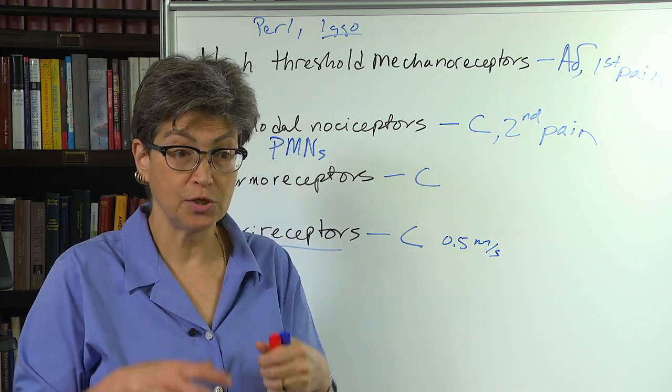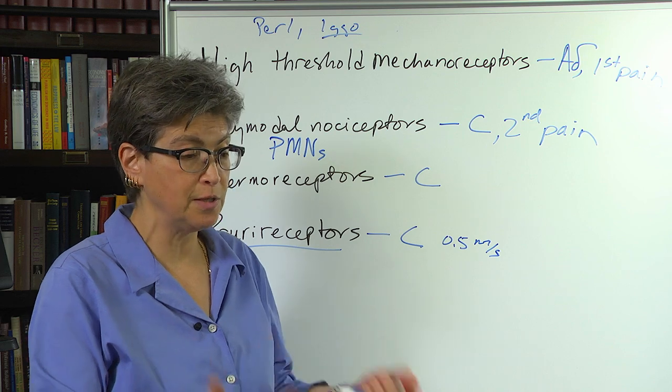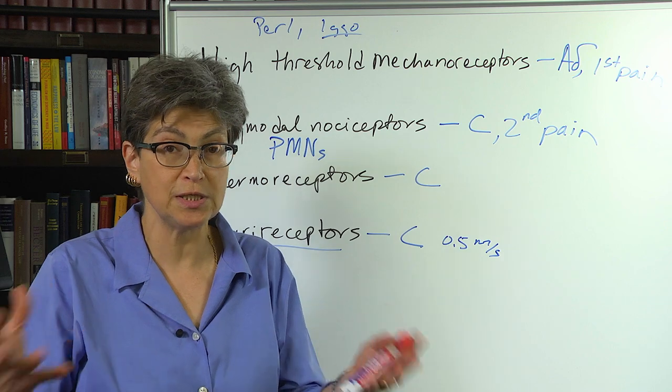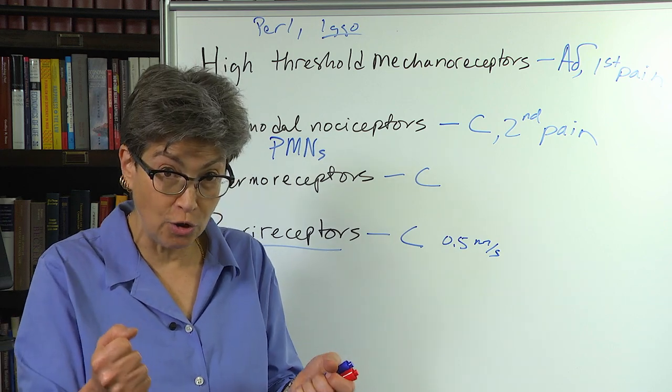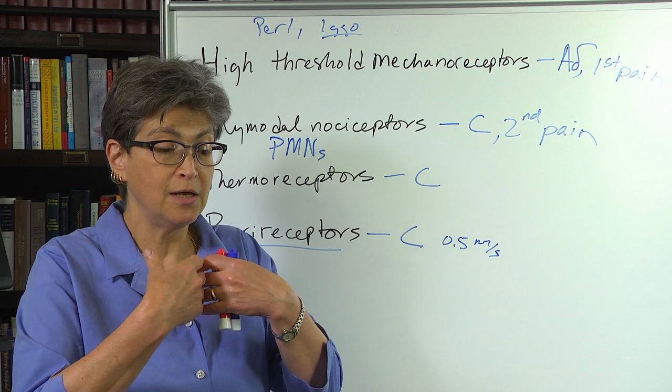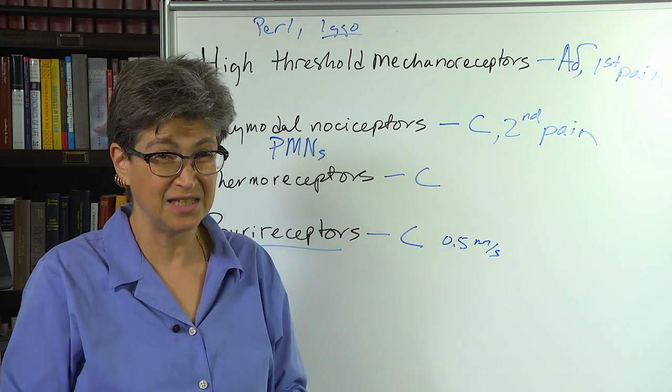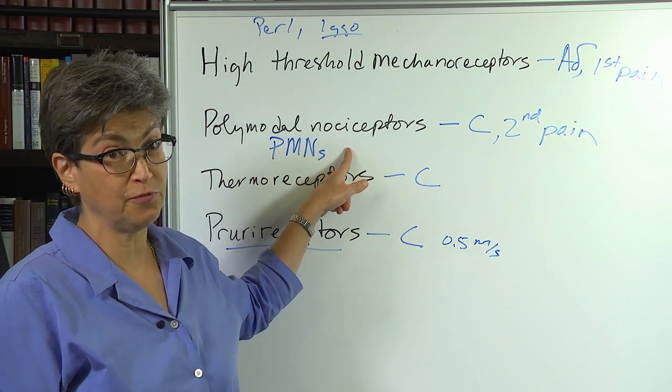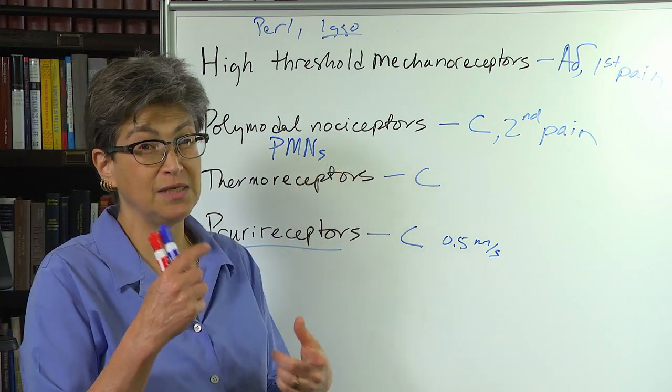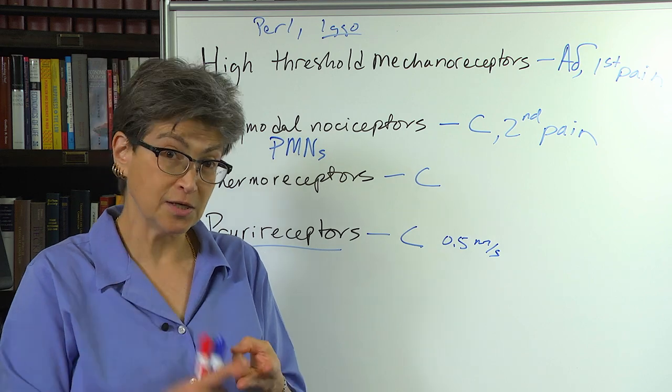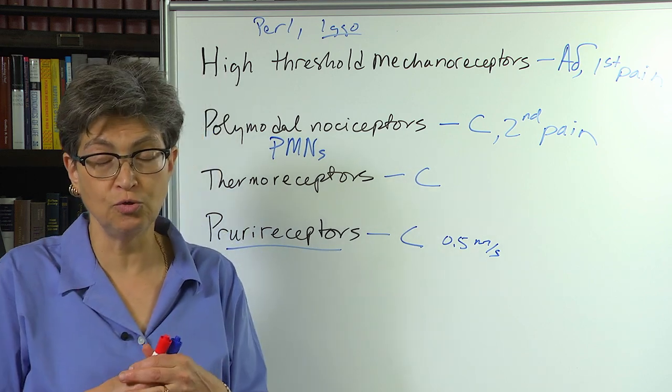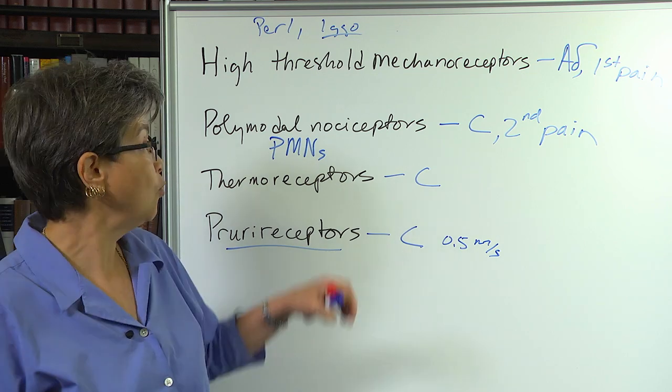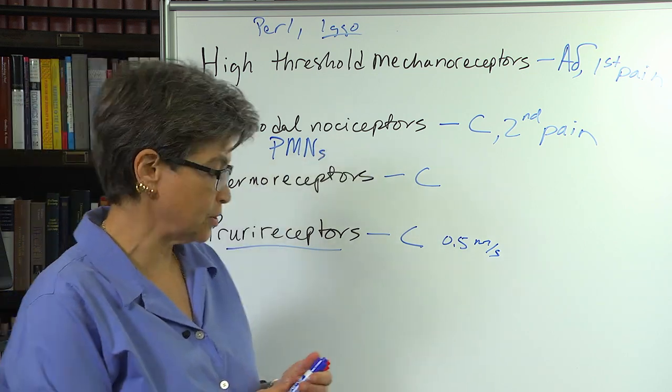And finally, they're also sensitive to chemicals - chemicals that are in the body, such as the chemicals that are released when cells rupture. So ultimately, tissue damage can rupture cells. The contents of that and the contents of the blood vessels spills out. And these polymodal nociceptors are very excited by all of that, by, say, potassium, bradykinin, serotonin - all these normal components of injured tissue will excite the polymodal nociceptors.